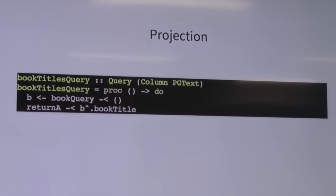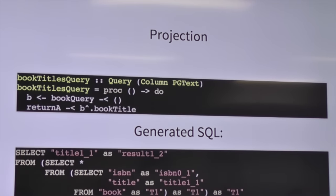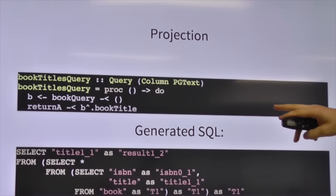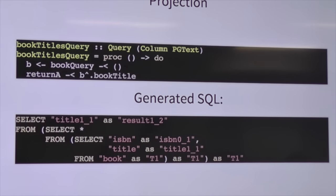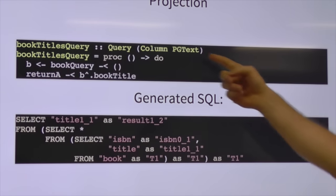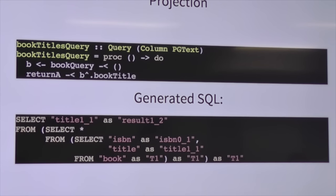In SQL we can also project, so we don't necessarily want every column from the books. If we remove the restriction and just select our reference to `bookTitle`, we get what we expect — just the title selected out. This query is now returning a `Column PGText`, so it's no longer related to `Book` at all, which unfortunately means you don't know where that text is from anymore. That's why the newtypes really start to make sense, especially with IDs when you want to join them to other things.